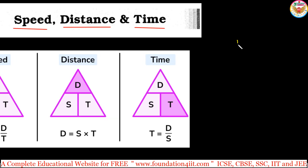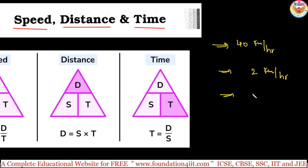Generally, when a vehicle is going we say it is going 40 kilometers per hour, a man is walking 2 kilometers per hour, or a bird is flying 40 meters per second. So we use units like kilometers per hour or meters per second — where kilometers or meters is distance, and hours or seconds is time. So distance divided by time gives us speed.